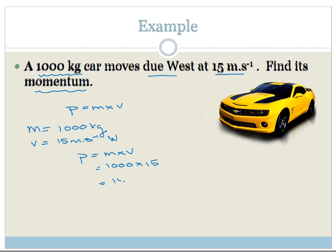Which is going to be 15,000. And remember your units, it's kilograms meters per second, and then it's a vector, so therefore we need to say the direction, and the direction is west. Nice and easy, right?